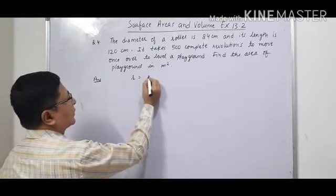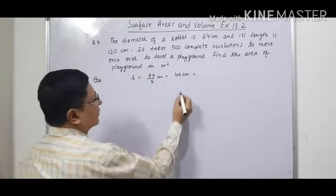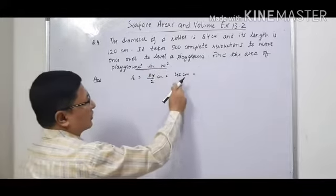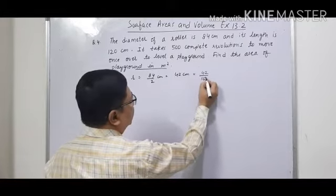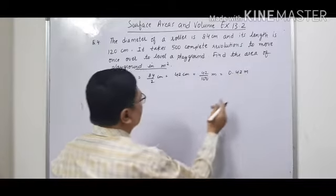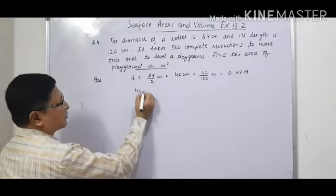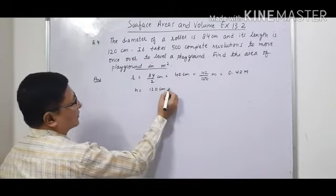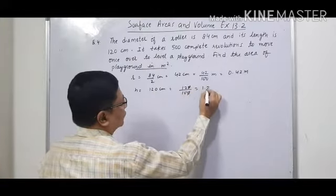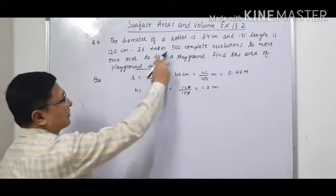So the radius will become 84 upon 2 cm, that is 42 cm. If we convert in meter square, because we have to find the area of playground in meter square, so we have to convert this in meter. So 42 upon 100 meter, that will be 0.42 meter. And its length is 120 cm, that means it is having the height equal to 120 cm. This also will convert in meter: 120 upon 100, this will give 1.2 meter.